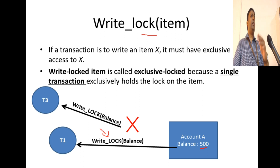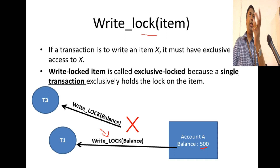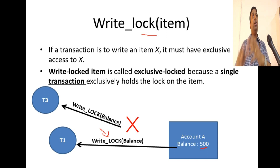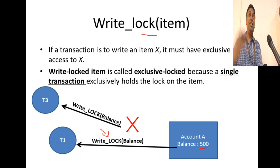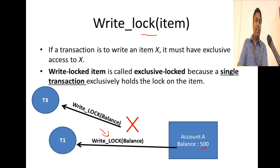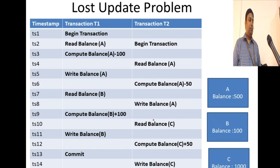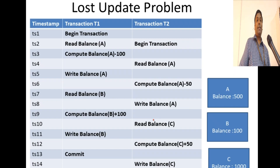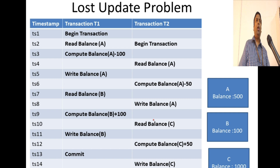Locks can be at various levels. It can be on a particular field in your table, it can be on the entire record, or it can be on the entire table too. There are different variations with respect to locks. In our discussion, we will be focusing on locking one particular field in a database. Now, we are going to go through the lost update problem again and see how locks prevent this lost update problem.